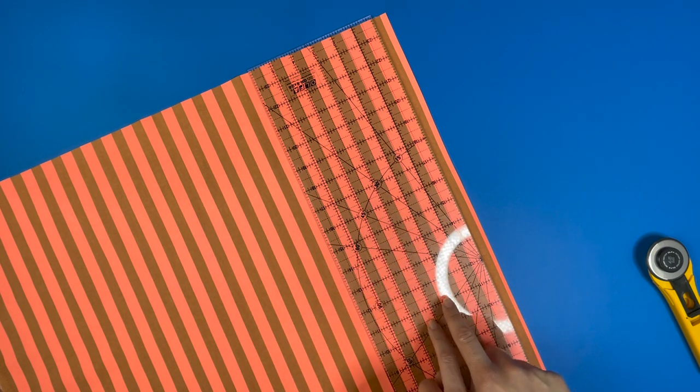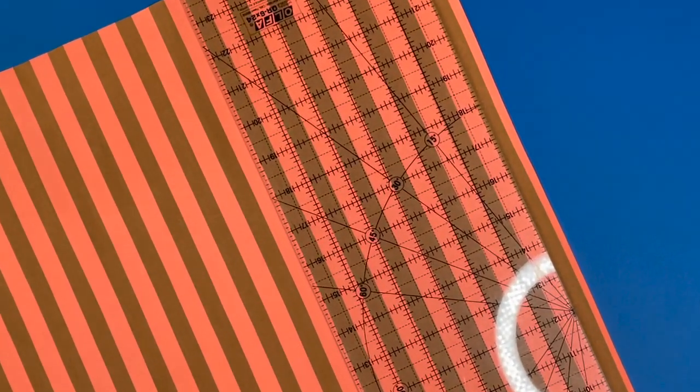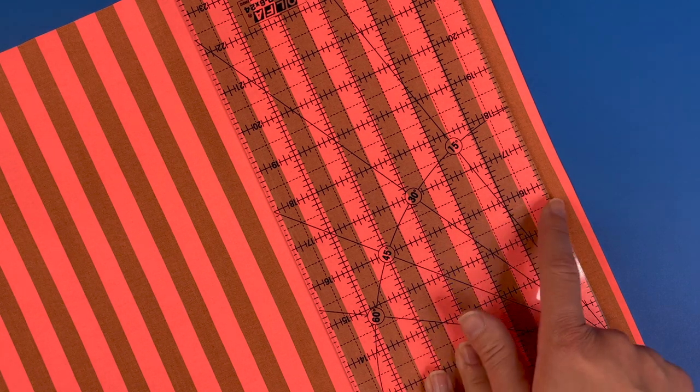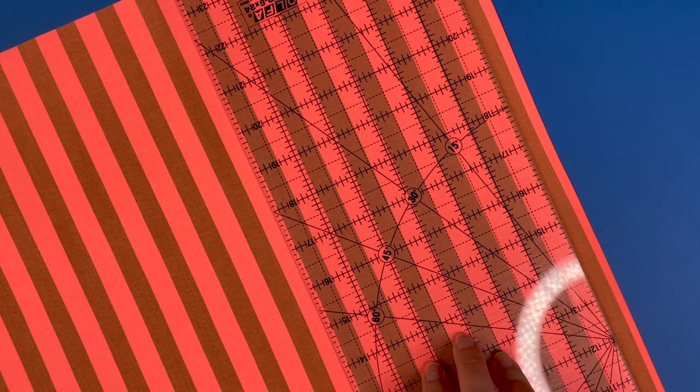And as you see as you go further out, I'll zoom in for you, and you can see as you go out that the half inch lines of the ruler no longer line up perfectly with the strips of the fabric. That's okay.